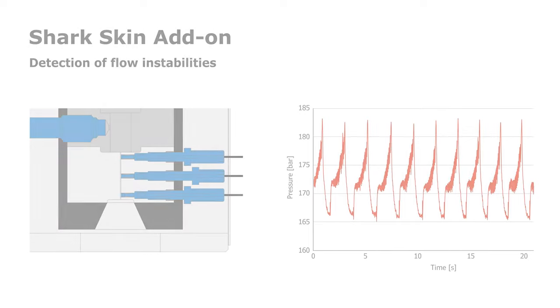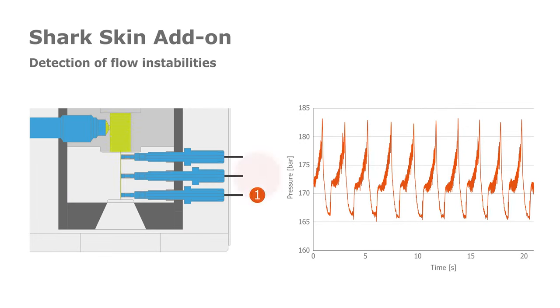Sharkskin can be measured directly by our sharkskin die. The sharkskin die is a slit die which consists of three fast acquisition pressure transducers, which allows an effective detection of flow instability, starting from sharkskin up to mild fracture.